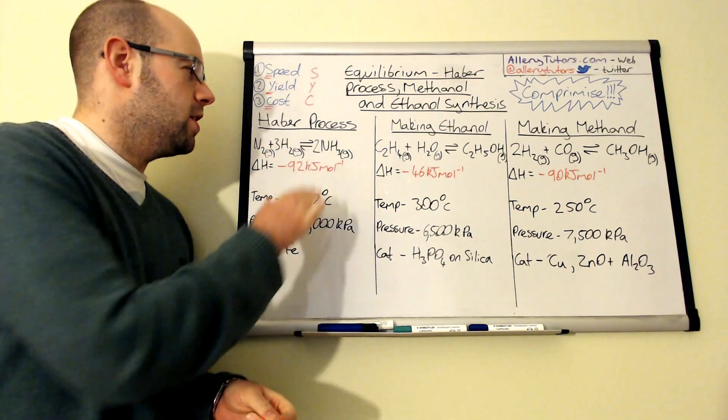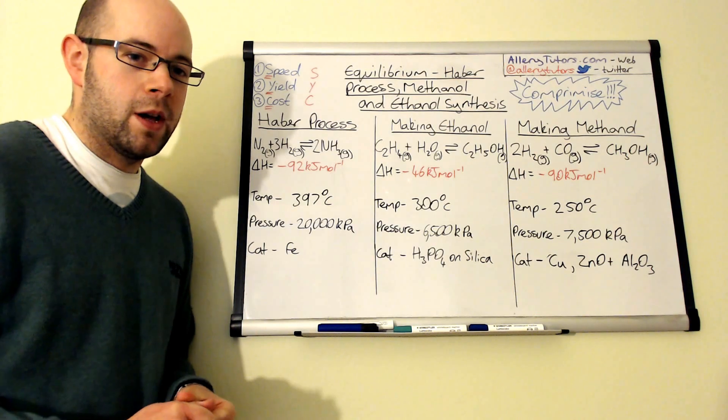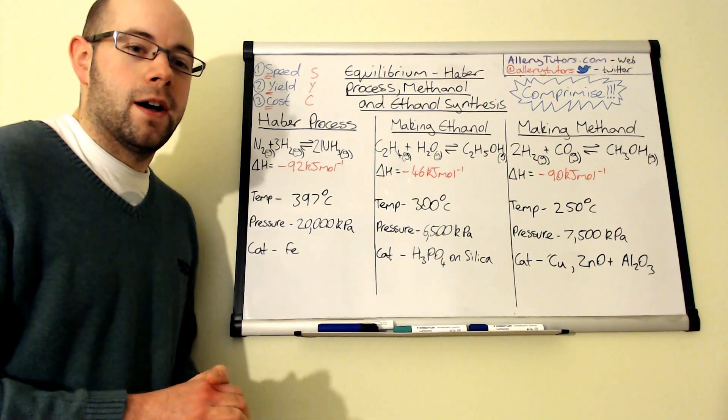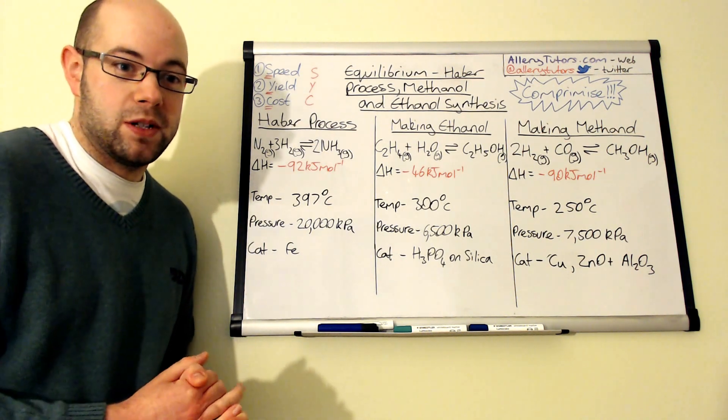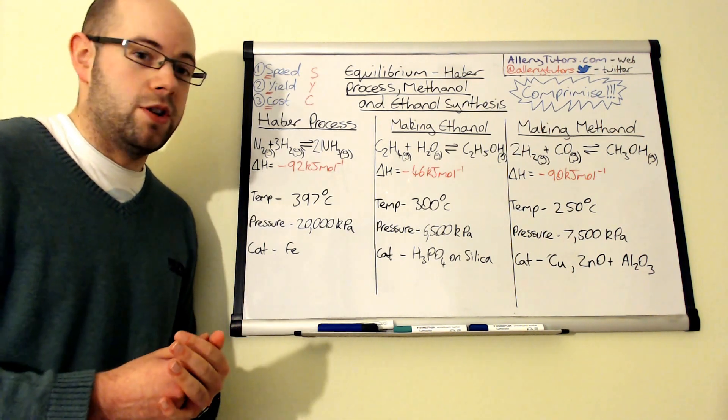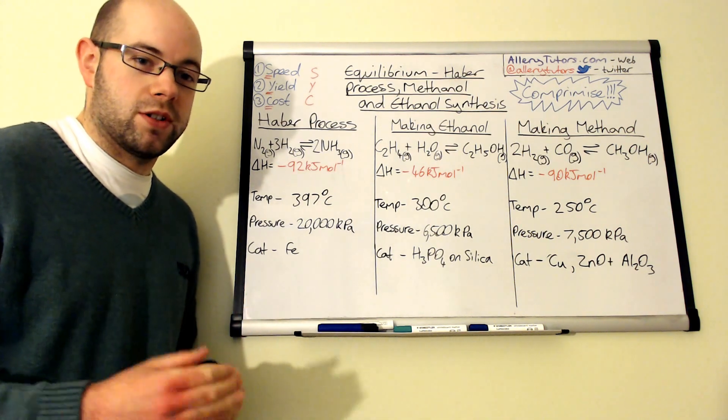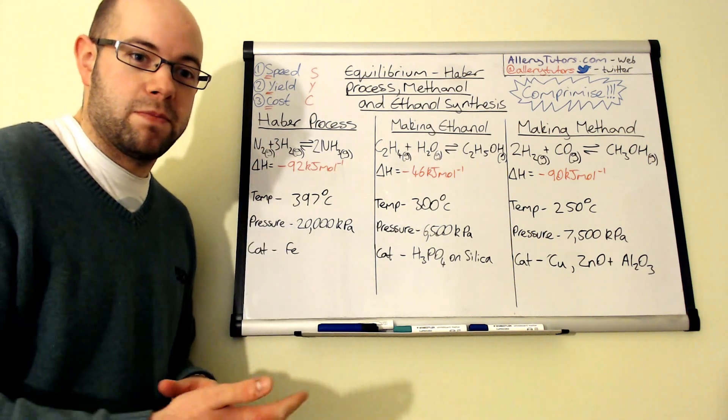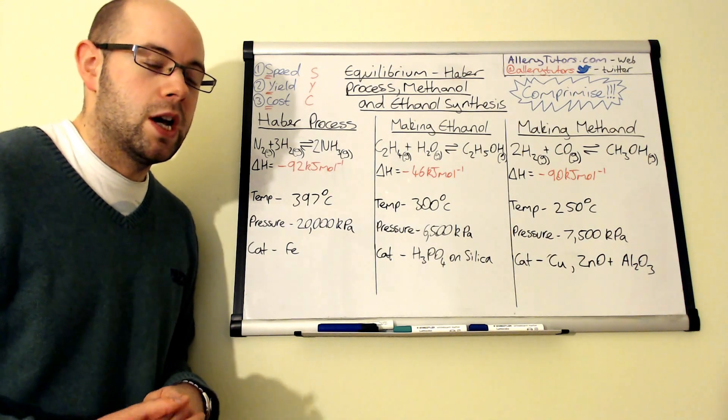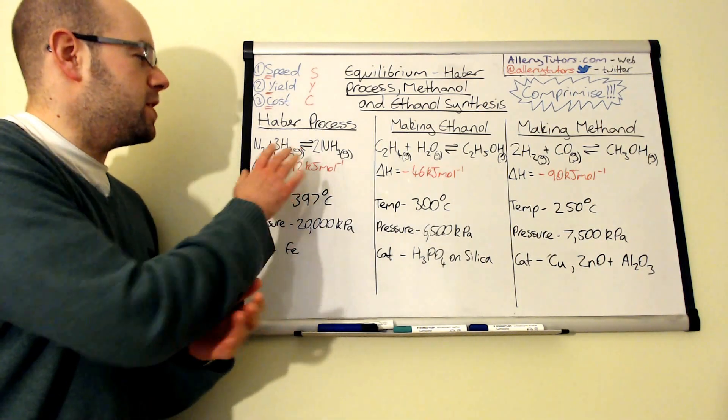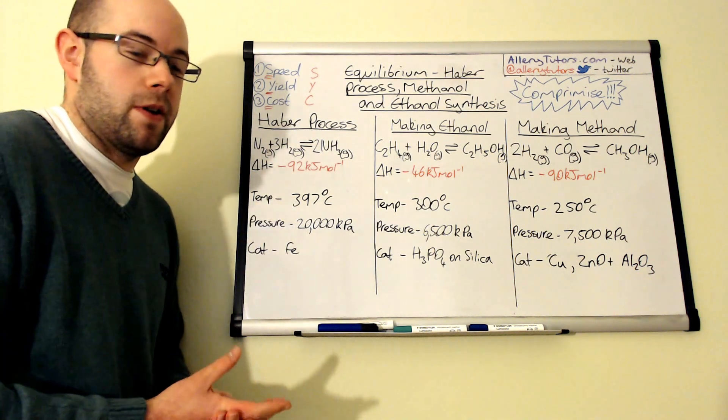It was initially started for food production and explosives, using ammonia to make explosives. But actually, after that, this is probably one of the most vital chemical reactions that's probably ever been discovered, mainly because of its use as a fertilizer. Since the introduction of this we've been able to make a lot more food globally and feed an ever increasing population.